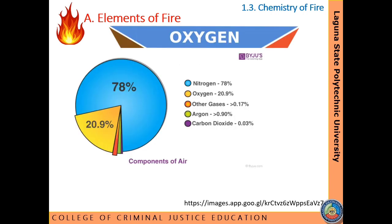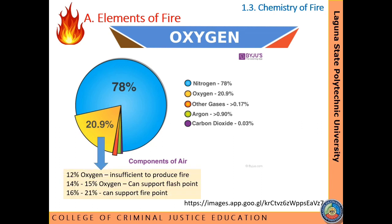The third element of fire is oxygen. Oxygen in air is the common oxidizing agent that combines with fuel vapor. The components of air are: nitrogen at 78%, oxygen at 20.9% (sometimes rounded to 21%), and approximately 1% inert gases such as argon and carbon dioxide. Note that 12% oxygen is insufficient to produce fire; at 14–15% oxygen it can support flash point; and at 16–21% it can support fire point.